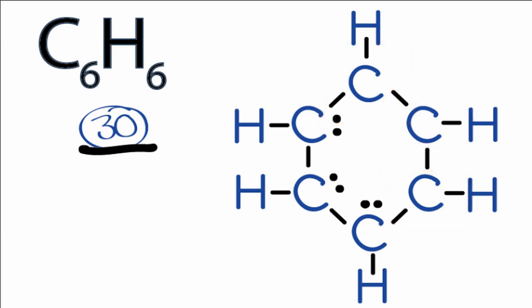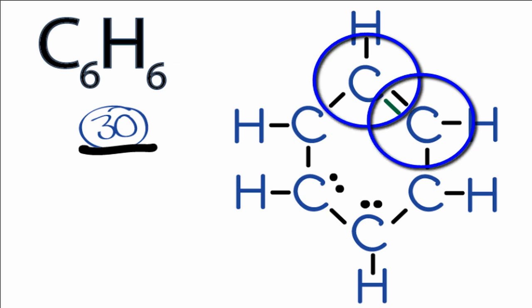So we're going to need to form some double bonds. It looks like we'll need three double bonds. So let's take these two valence electrons and form a double bond between these two carbons. So now, these two carbons here, they have eight valence electrons in their outer shell.